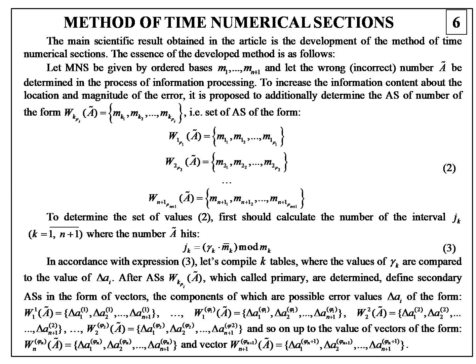The main scientific result is the development of the method of time in numerical sections. It is necessary to additionally determine the alternative set of the form of expression 2 to increase the information content about the place and magnitude of error.